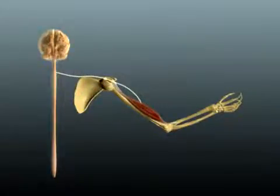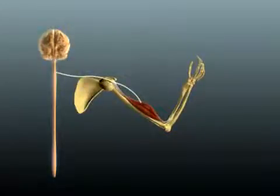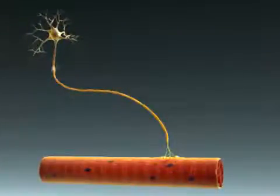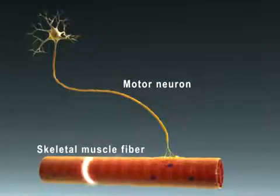Action potentials travel from the brain or spinal cord to trigger the contraction of skeletal muscles. An action potential propagates down a motor neuron to a skeletal muscle fiber.